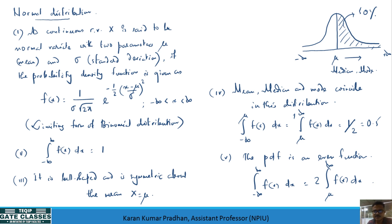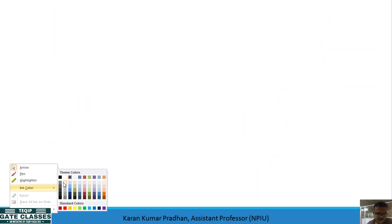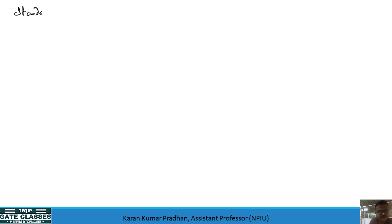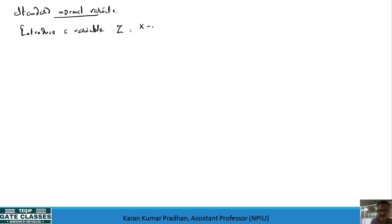When finding probabilities for a normal variate, we do not use the general PDF directly; instead we use a transformation to the standard normal variate. We introduce a new variable Z = (X - mu) / sigma.